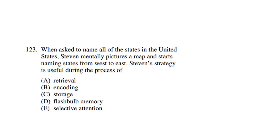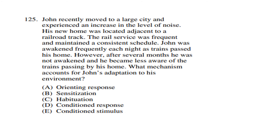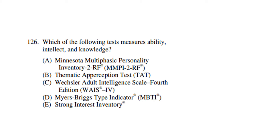Question 123: When asked to name all of the states in the United States, Steven mentally pictures a map and starts naming states from west to east. Steven's strategy is useful during the process of retrieval. Question 124: Albert recently noticed difficulty hearing people at crowded parties even though his hearing seems fine in quiet surroundings — he most likely has damage to his hair cells. Question 125: John recently moved to a large city near railroad tracks. Initially he was awakened frequently by passing trains, but after several months he became less aware of them. The mechanism accounting for John's adaptation is habituation.